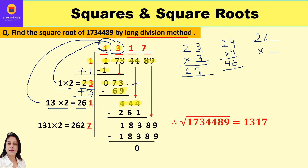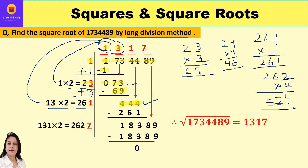We need a digit for the blank such that the product is ≤ 444. Trying 1: 261×1=261, which is less than 444. Trying 2: 262×2=524, which is greater than 444. So we stick with 1. The new divisor is 261, the new quotient digit is 1, the product is 261, and the difference is 183. Bring down the next period 89, making the new dividend 18389.